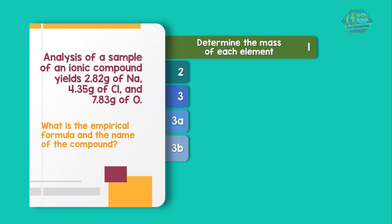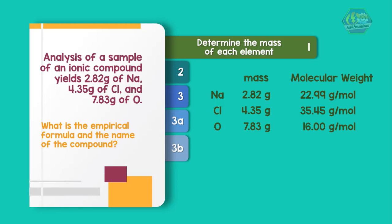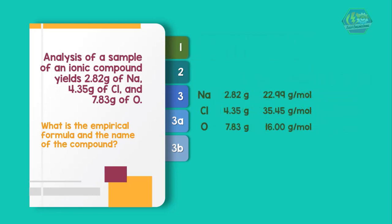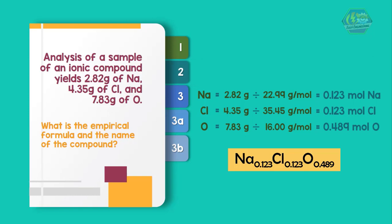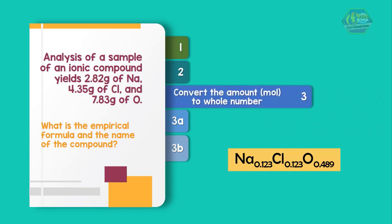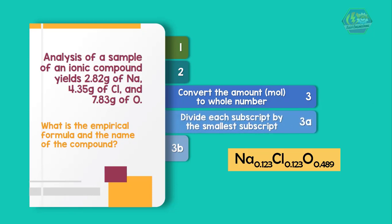Number one: determine the mass of each element. Number two: convert mass gram to amount mole. Now we have number three: convert the amount mole to whole number. Divide each subscript by the smallest subscript.